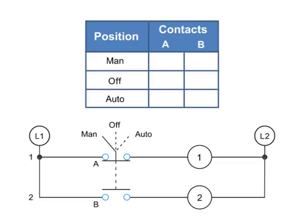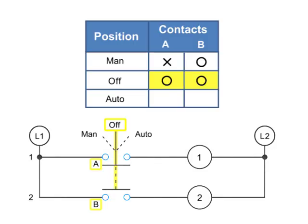In this illustration of a three-position selector switch, a third row is added to the truth table, so we now have a manual position, an OFF position, and an AUTO. Thus, in the MAN position, A is X or closed and B is O or open. At the OFF position, both A and B are O or open. With the selector switch set to AUTO, contact A is O or open and B is X or closed.